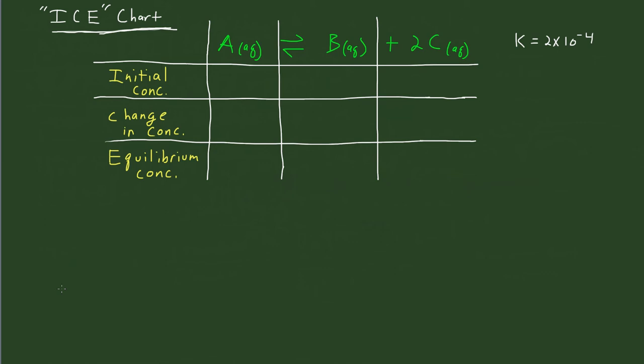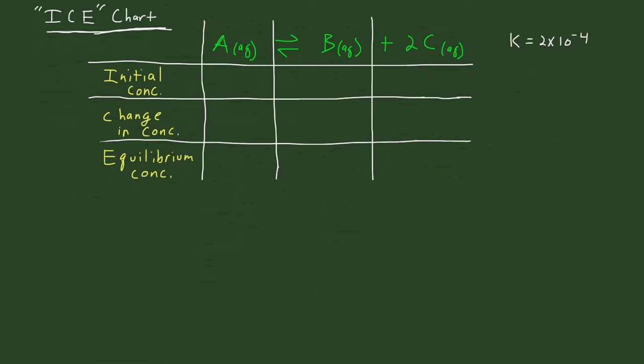In this video we're going to talk about the basics of something called the ICE chart, which is used primarily for reactions that are in equilibrium. Since we have a forward reaction and a reverse reaction in a lot of cases, it doesn't simply just go forward — it could also go in the reverse direction, and it gets kind of complicated.